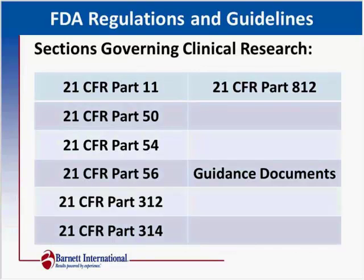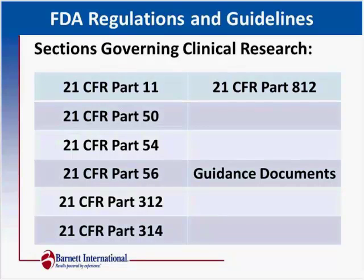This slide shows the sections of the federal regulations that govern clinical research, and within each of these sections, essential documents can be found. Part 11 discusses electronic records and signature requirements. Part 50 discusses the documentation requirements for informed consent and the informed consent process. Part 54 discusses financial disclosure forms. Part 56 talks about IRB correspondence, like approval letters for initial approval, amendments, or any changes made along the way. Part 312 discusses the requirement for accurate documentation of subject case histories as well as investigational product management.